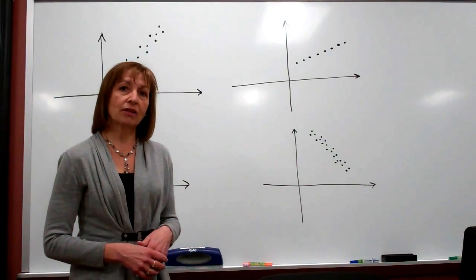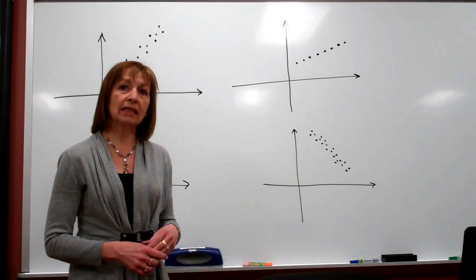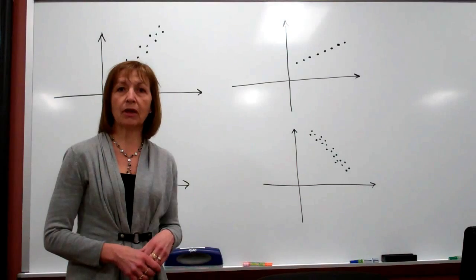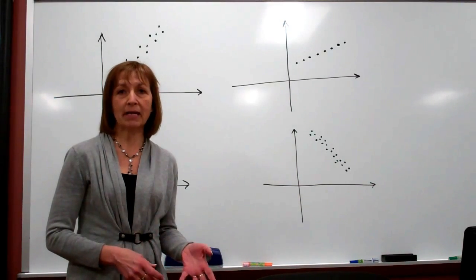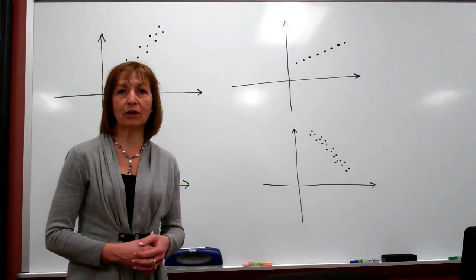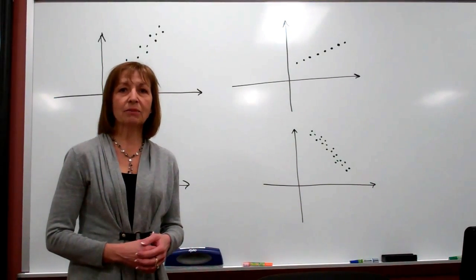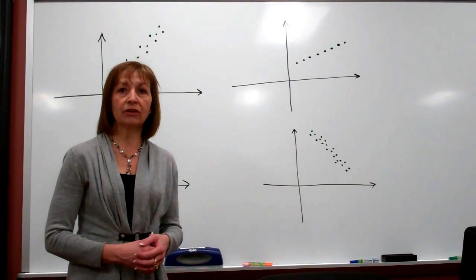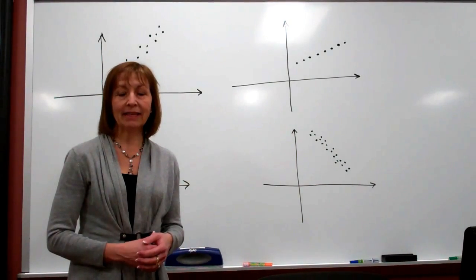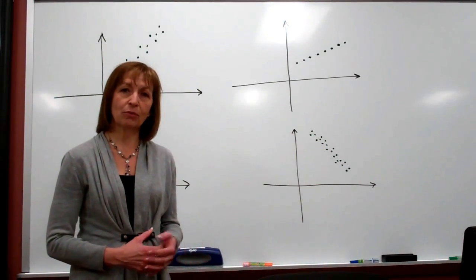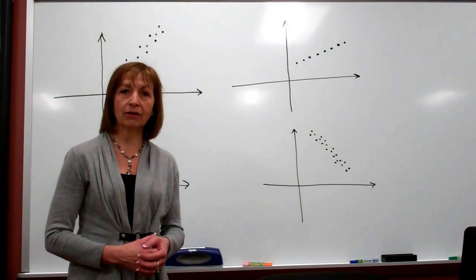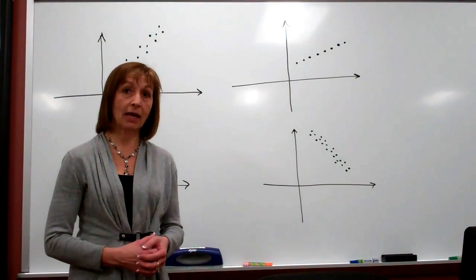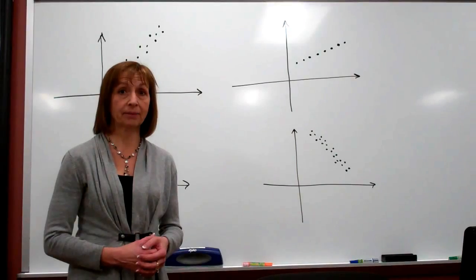This segment talks about a linear model that we might be able to make between two variables, and specifically an idea called the linear correlation coefficient that can help us determine whether the model that we create is a reliable model or not.